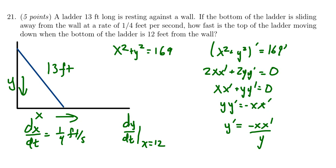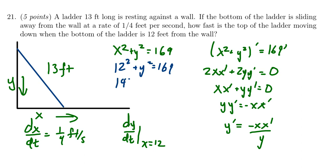Dividing both sides by Y, we see that Y prime equals negative X·X prime over Y. So we have a formula for Y prime. We can plug in 12 for X and one quarter for X prime, but we don't know what Y is. So we go back to our Pythagorean relationship: if X equals 12, we get 12 squared plus Y squared equals 169. Since 12 squared is 144, subtracting 144 from both sides gives Y squared equals 25, so Y equals 5.